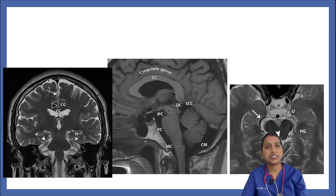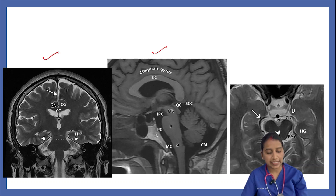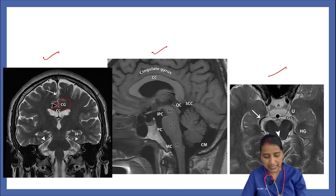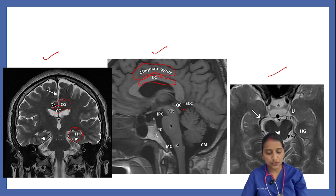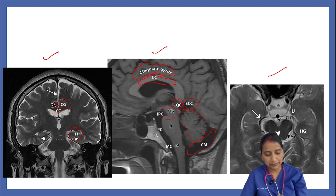This is the relevant radiological anatomy. Shown here is a coronal MR image, a sagittal view, and an axial view. Important structures include the cingulate gyrus, corpus callosum, hippocampus, supracerebellar cistern above the cerebellum, cisterna magna, quadrigeminal cistern, midbrain, pons, medulla, pontine cistern, medullary cistern, and interpeduncular cistern.